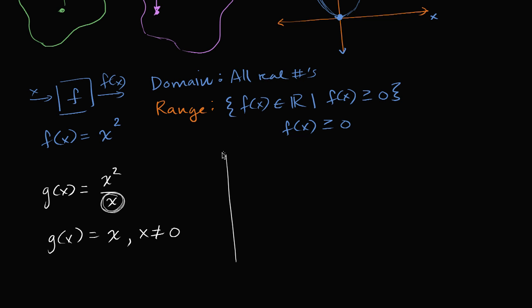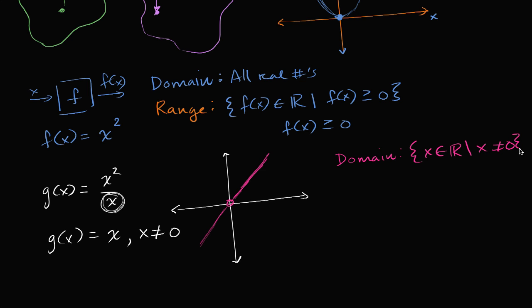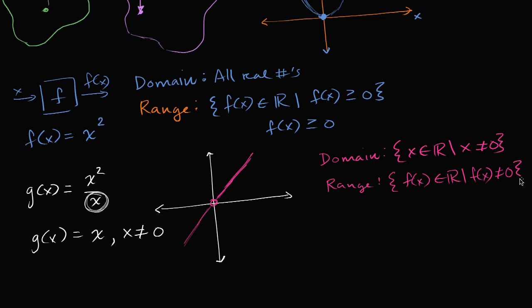We can graph this — it's going to have a slope of one but with a hole right at zero because it's not defined there. So the domain of g is: x is a member of the real numbers such that x does not equal zero. The range is also going to be: f of x is a member of the real numbers such that f of x does not equal zero. The domain is all real numbers except zero, and the range is all real numbers except zero. The big takeaway is that the range is the set of all possible outputs, and the domain is the set of all valid inputs.